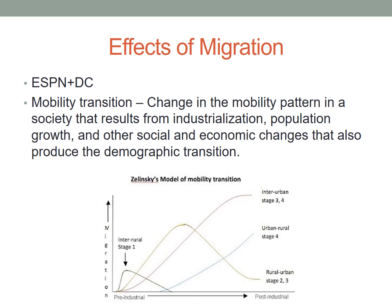Hello, human geographers. We are back at it again this evening. Tonight, we are going to look at the impacts that migration can have both on the source country and the destination country. As we often do, we're going to be contextualizing this through the lenses of ESPN DC. We want to think about the economic, social, political, environmental, demographic, and cultural effects of migration. We're going to start with the most basic part of this conversation, and that is the demographic impacts of migration.